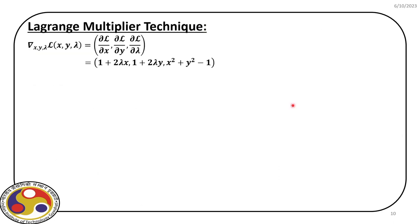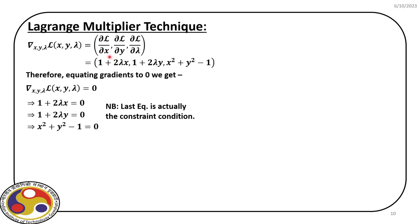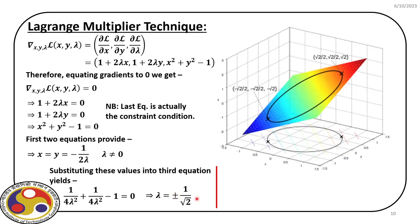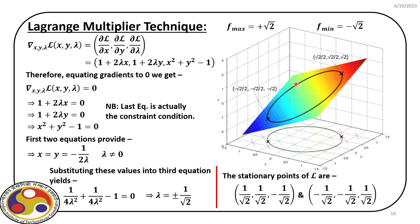We find the gradients and equate them to zero, yielding three equations. The last equation, from differentiating L with respect to lambda, automatically satisfies the constraint condition. Using equations 1 and 2, we represent x and y in terms of lambda, then substitute into the third equation to solve for lambda, which is plus or minus 1 over square root of 2. From this optimal solution we can estimate the maxima and minima points and their corresponding values, as well as two stationary points.